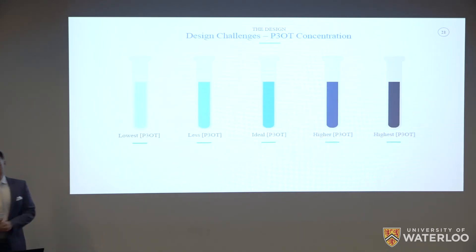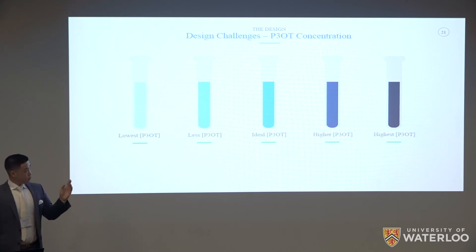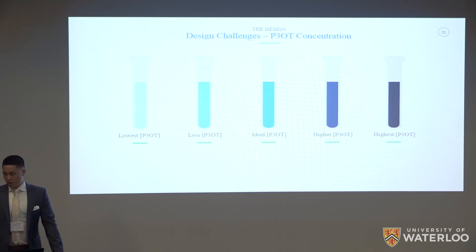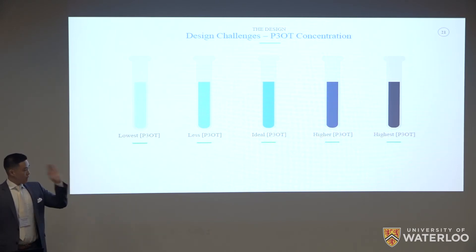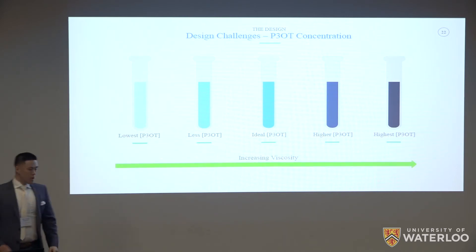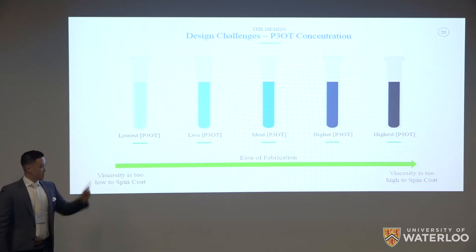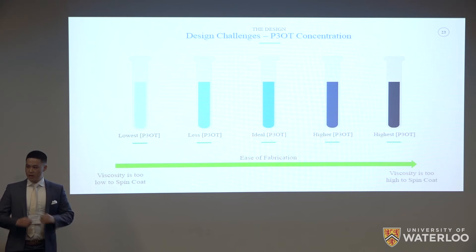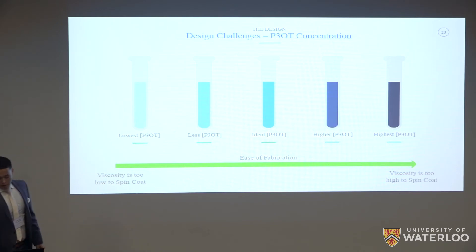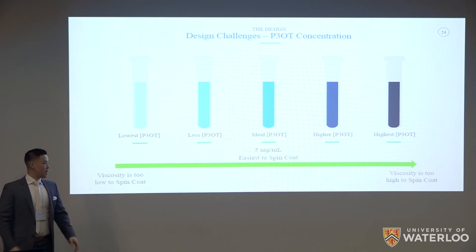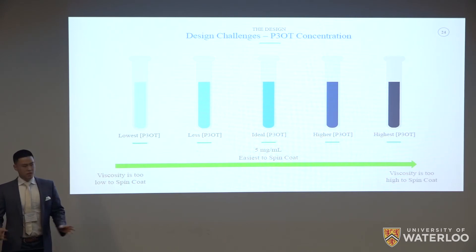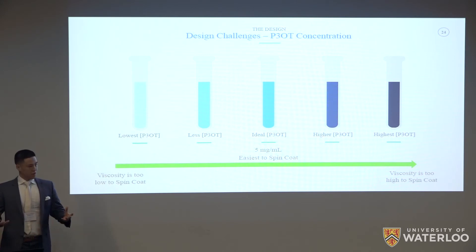We encountered some design challenges. The first was finding the ideal polymer concentration. Higher polymer concentration means increased viscosity. If viscosity is too high you can't spin coat it; if too low, the solution flies off the wafer. We found the middle ground to be five milligrams per milliliter after testing various concentrations, as this was the easiest to spin coat and produced a good quality film.